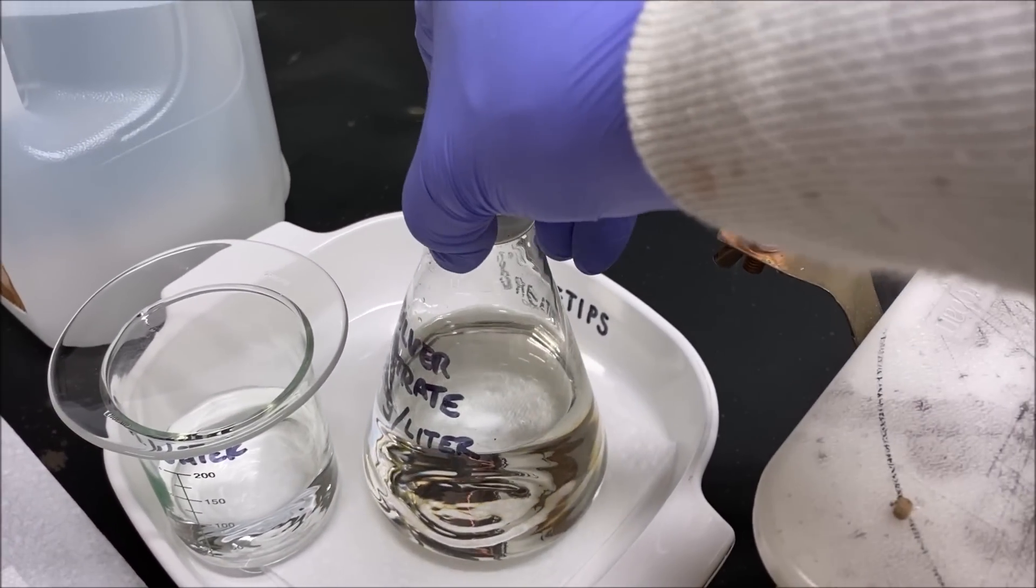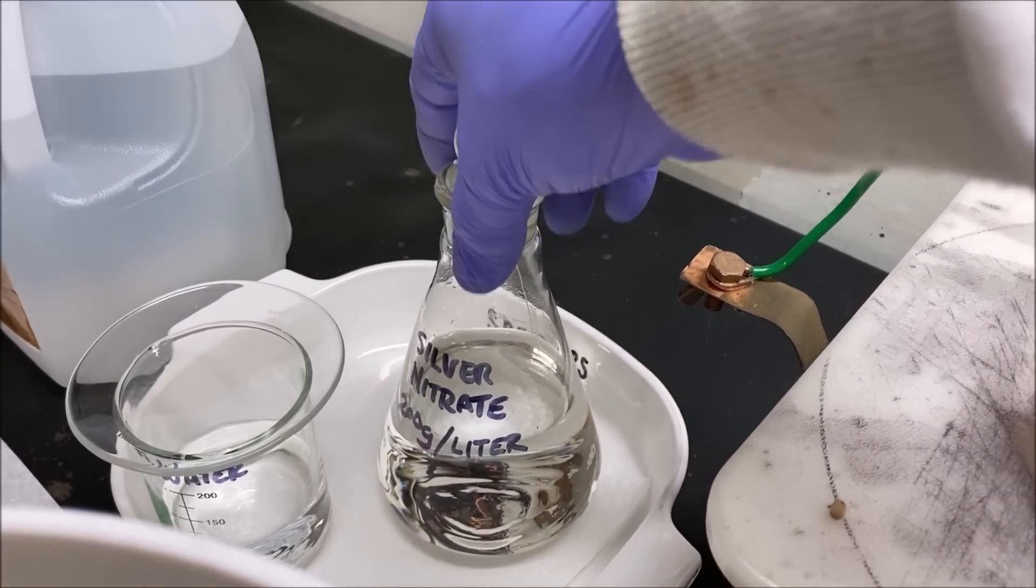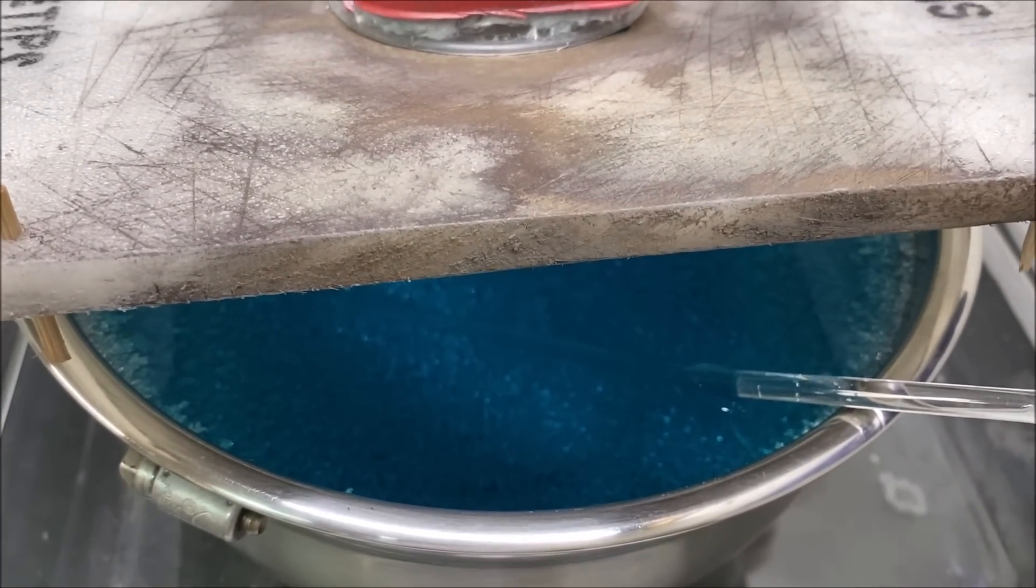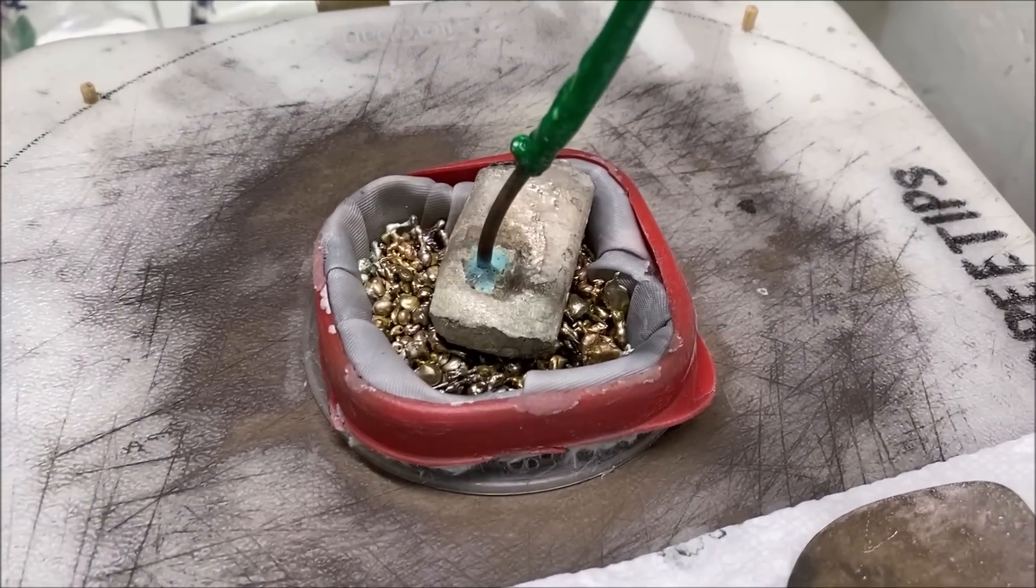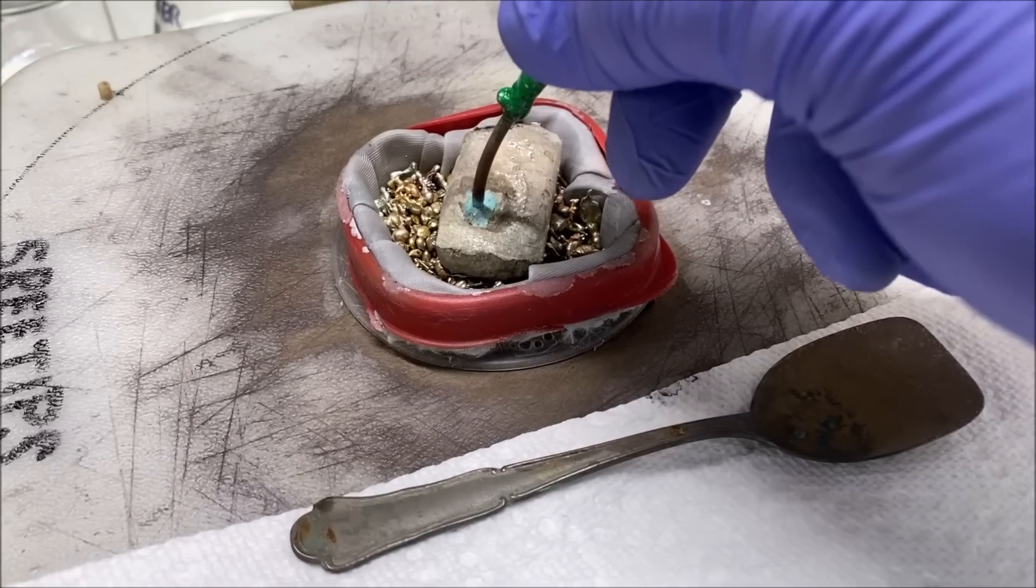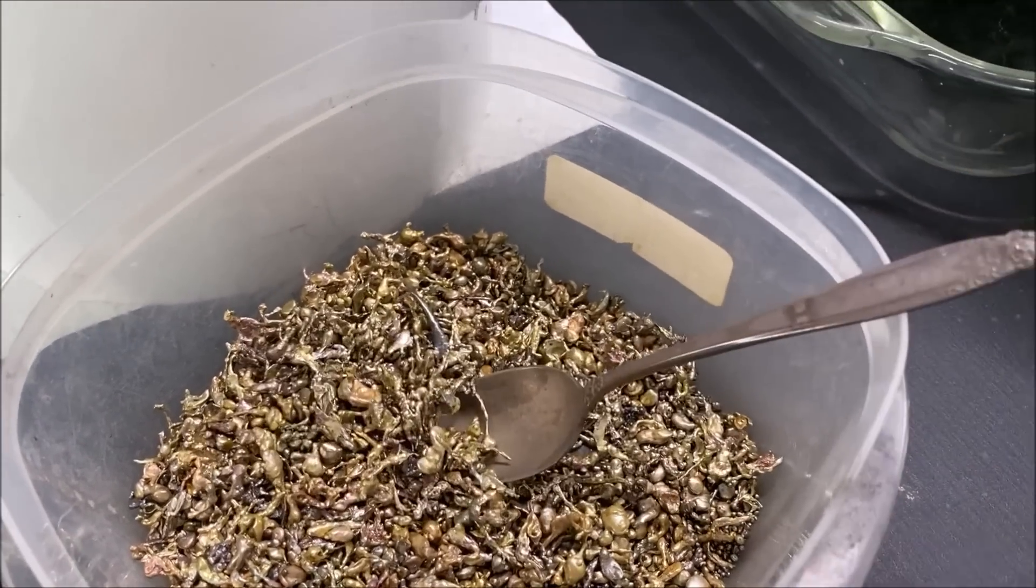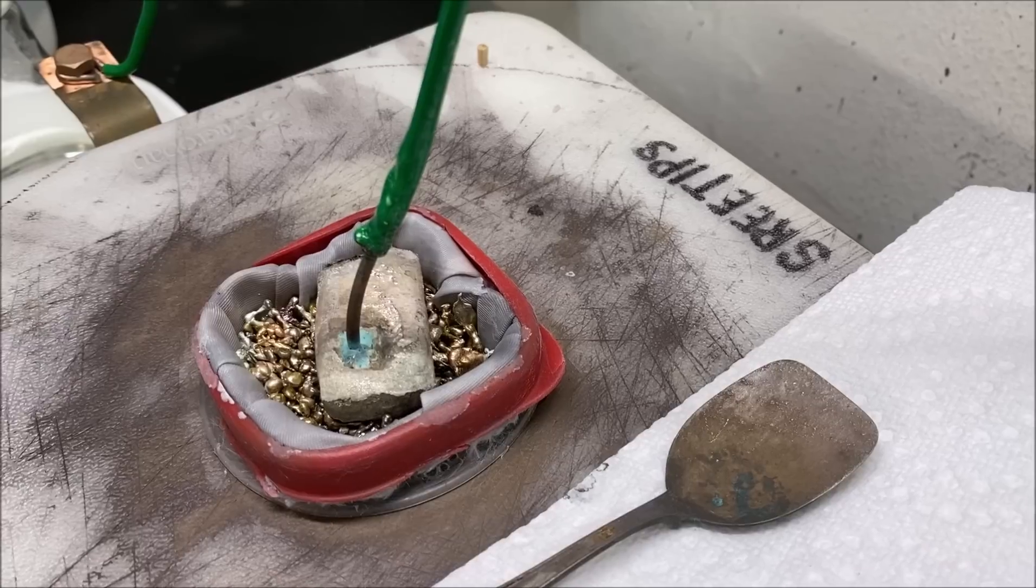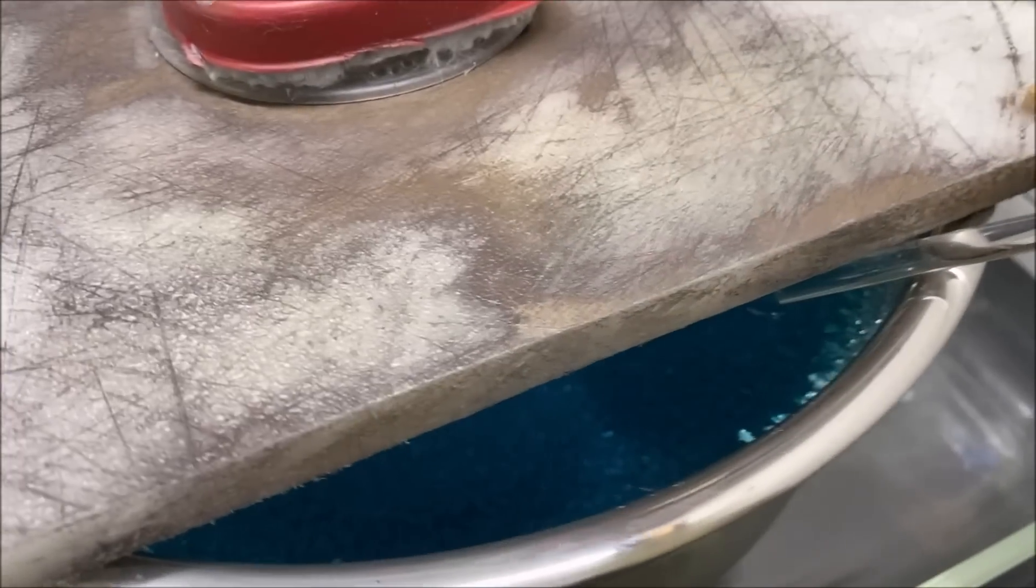Another question I get is, this is our electrolyte, it's crystal clear and colorless like water. And as we run the cell, the electrolyte begins to turn blue, as you can see here. And the reason is, this is because the impure silver that we're feeding into the anode basket has a little bit of copper in it, about one or two percent of these granules is copper. It's about 98 to 99 percent pure silver. So as the cell operates, that copper dissolves from the electric current going through the impure silver in the anode basket here, and it passes through the filter into the electrolyte. And that's why the electrolyte turns blue.